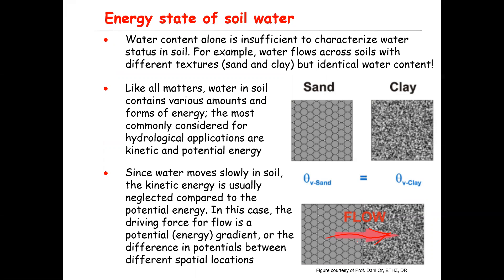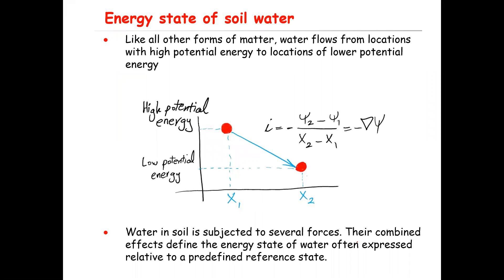When you only consider potential energy, the driving force for flow is a potential gradient. Water flows from locations with higher potential energy to locations of lower potential energy. So here, point one has potential psi one and point two has potential psi two, and the gradient I is equal to minus (psi two minus psi one) divided by (x two minus x one). Since psi two is less than psi one, psi two minus psi one is negative, so I add the minus sign to get a positive value. Therefore, I equals minus the gradient of psi.